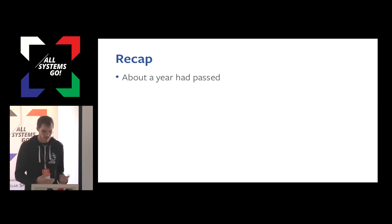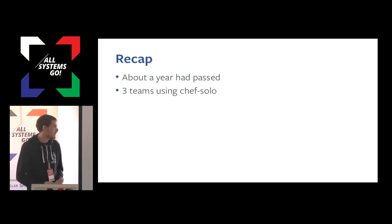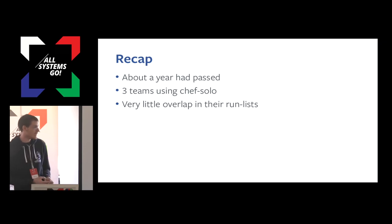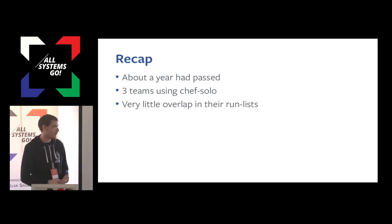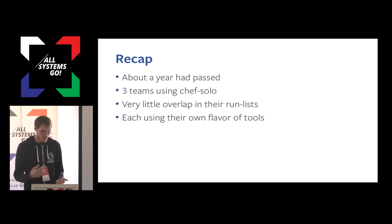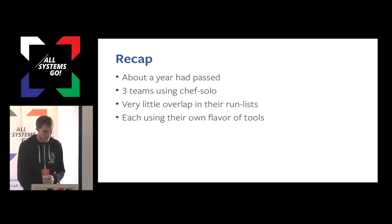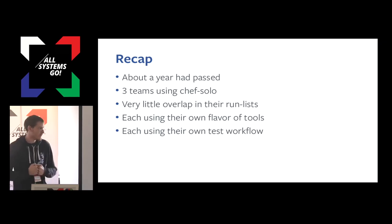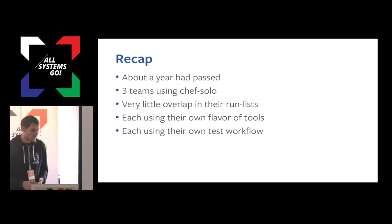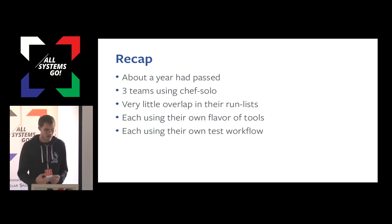Quick recap: about a year had passed since Instagram had started their migration. There were now three teams using Chef Solo, all using their own Chef code. At the time, there were about three different ways of managing Yum configs — if we wanted to change some option on the Yum servers, we would need to go find where each team had configured their Yum confs and change that. They were also using their own flavor of the tools — two teams were using ChefCuddle Solo, ProdChef was using regular ChefCuddle, and another team was running it a different way. Whenever we wanted to make a Chef change, we needed to test it in three or four different ways because each team had their own testing workflow. This was a huge cost for us on the OS team.